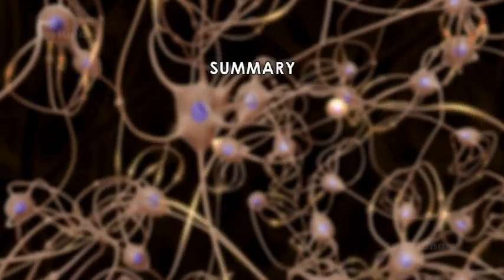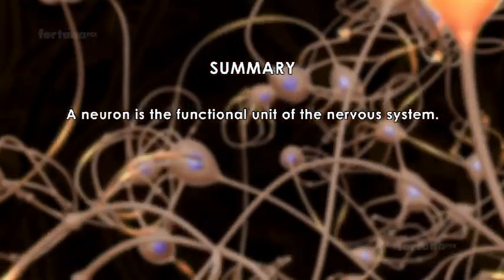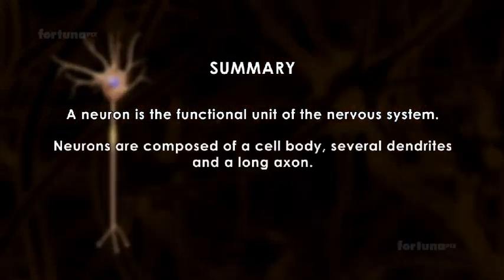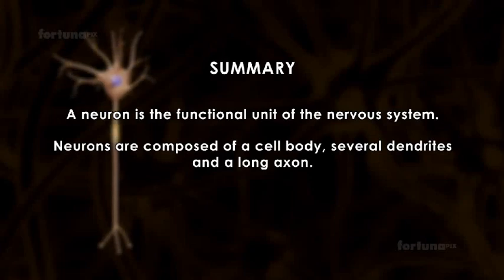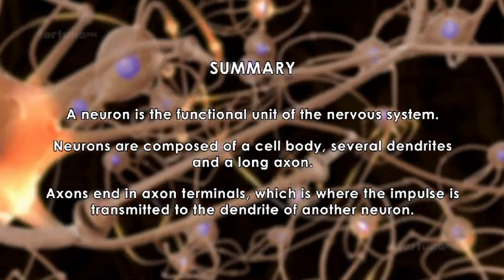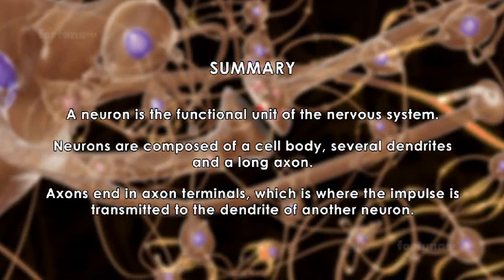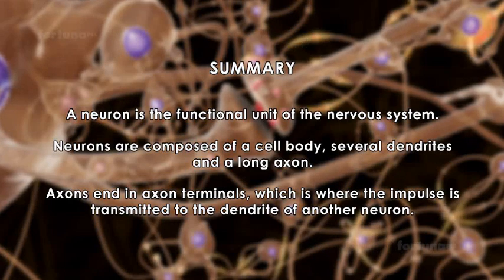Summary: A neuron is the functional unit of the nervous system. Neurons are composed of a cell body, several dendrites, and a long axon. Axons end in axon terminals, which is where the impulse is transmitted to the dendrite of another neuron.